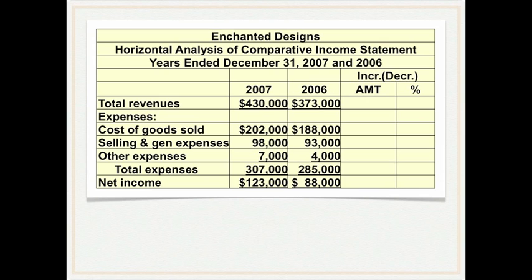The first thing we want to do is calculate the amount change. To do that we simply get the difference between our base year and the year we're analyzing. The amount of the change is $57,000. Now we also want to calculate the percent change from 2006 to 2007 for total revenues. We take the amount of change, $57,000, and divide that by the base year amount of $373,000, which gives us a 15.3% increase in total revenues.